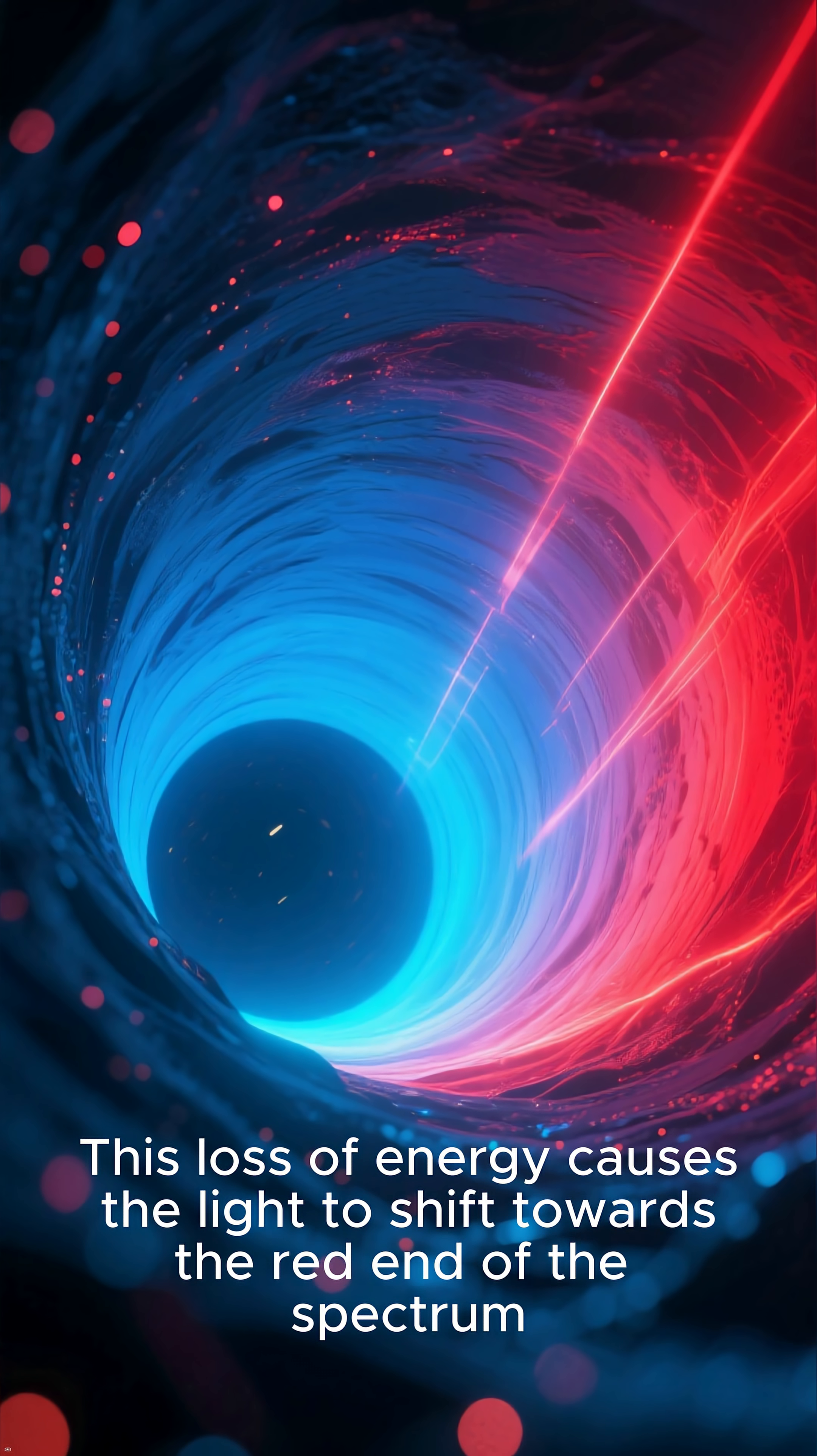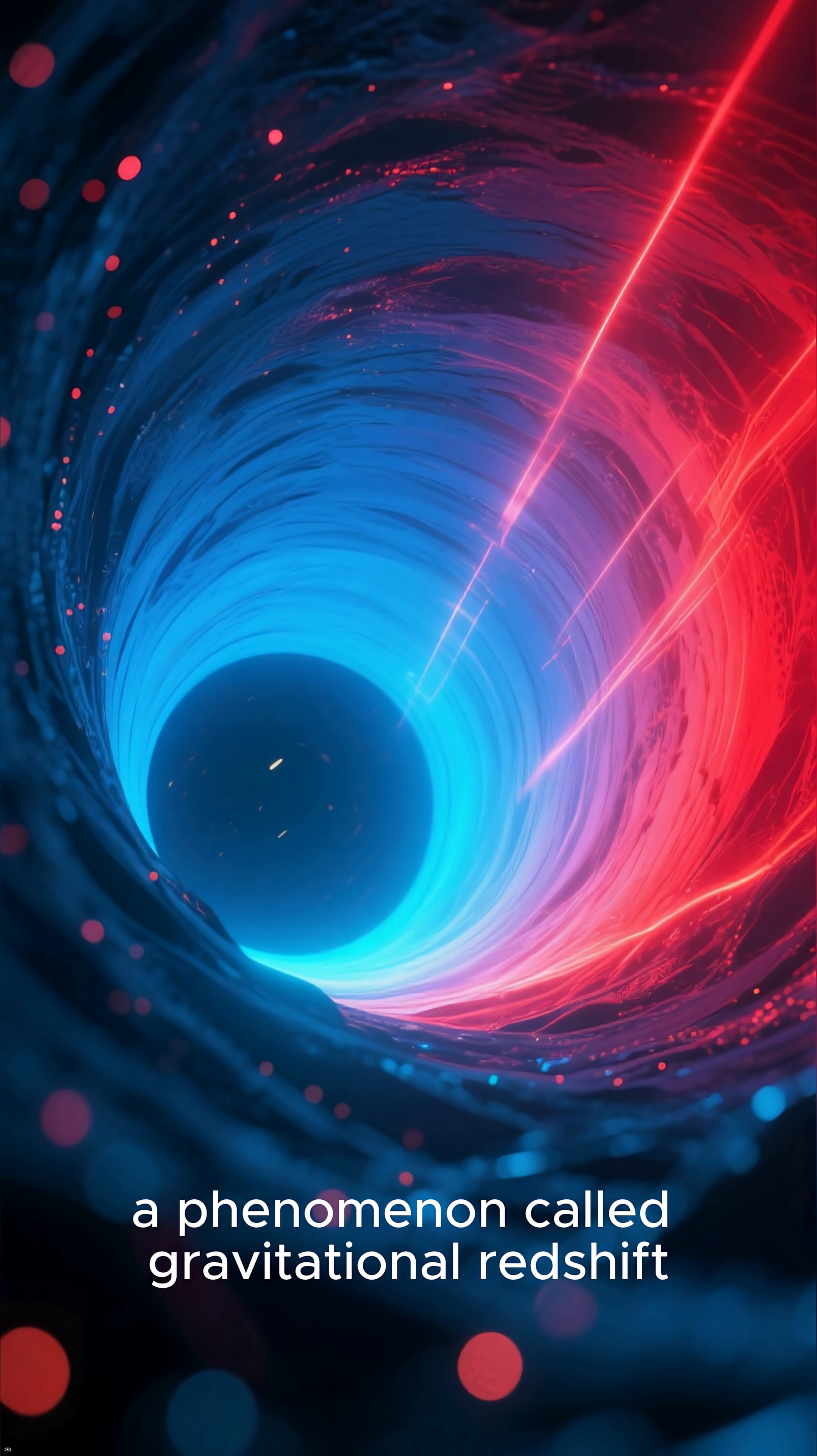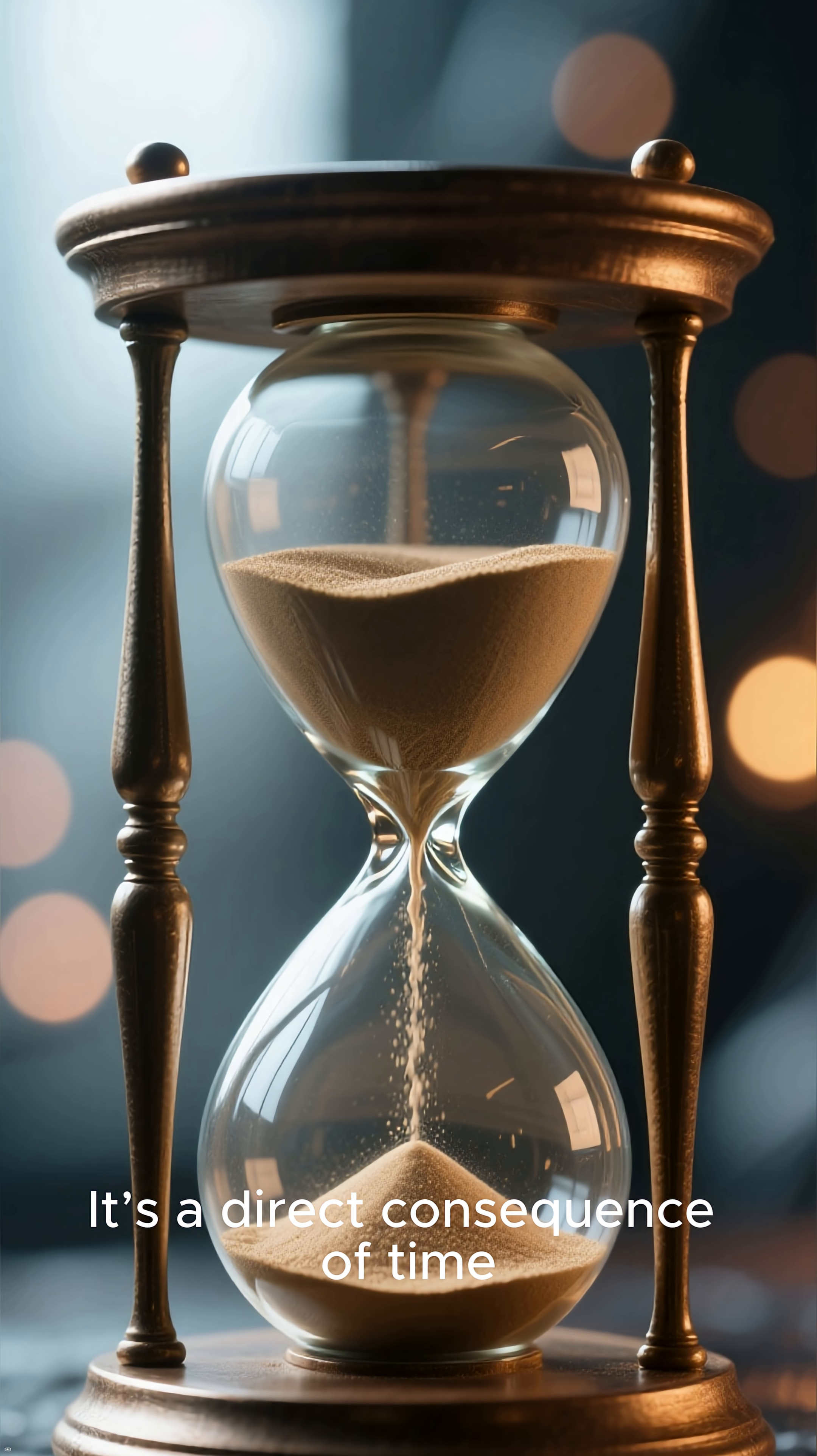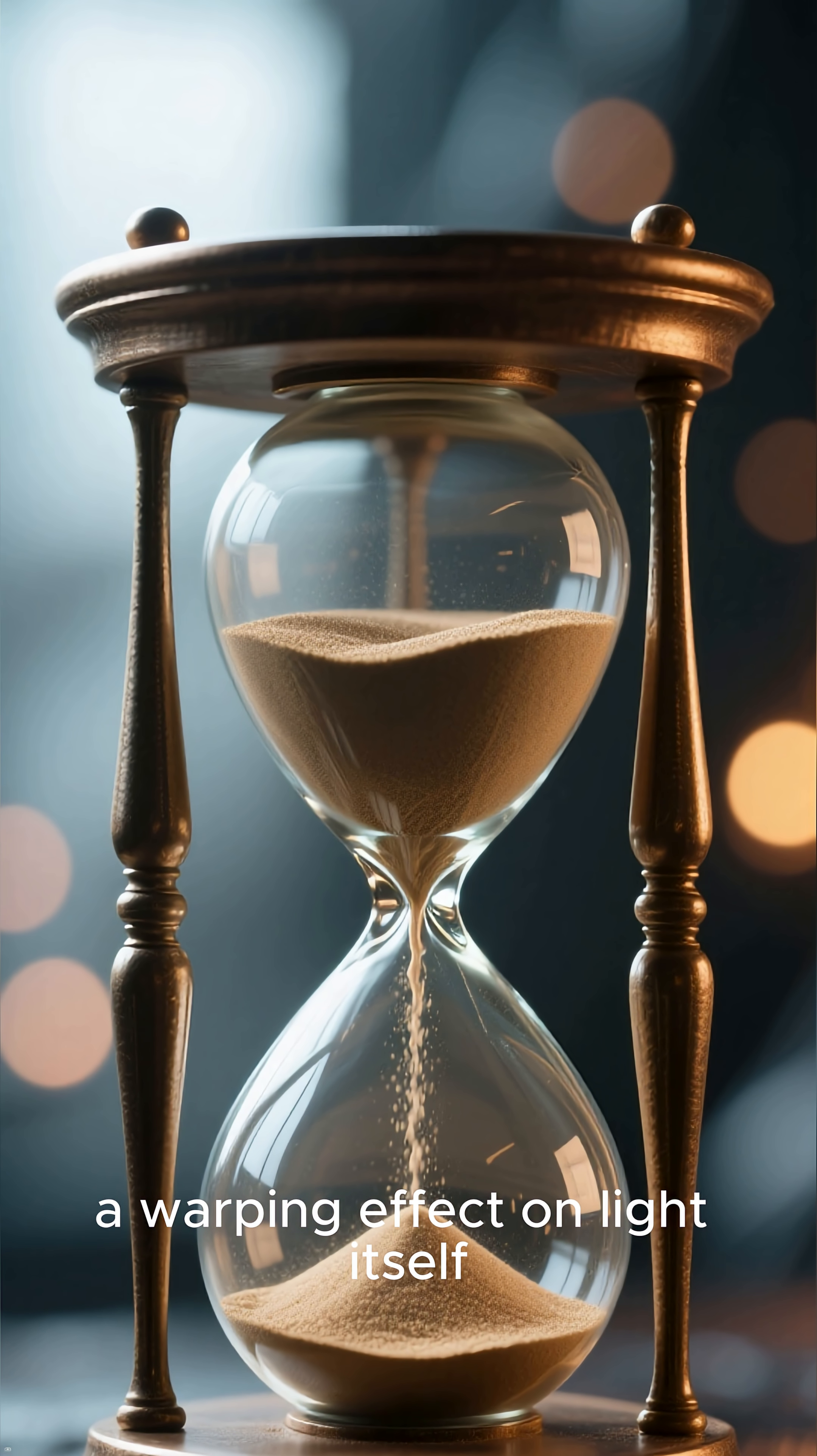light actually loses energy as it climbs out of the gravity well. This loss of energy causes the light to shift towards the red end of the spectrum, a phenomenon called gravitational redshift. It's a direct consequence of time running slower in stronger gravity, a warping effect on light itself.